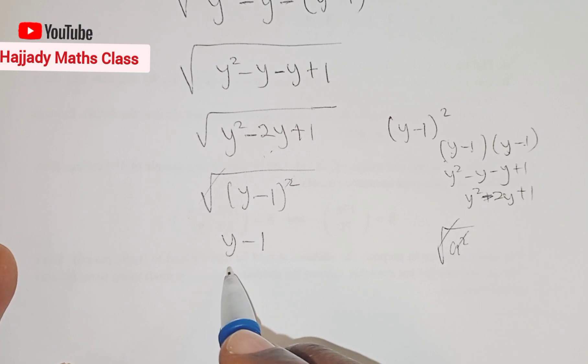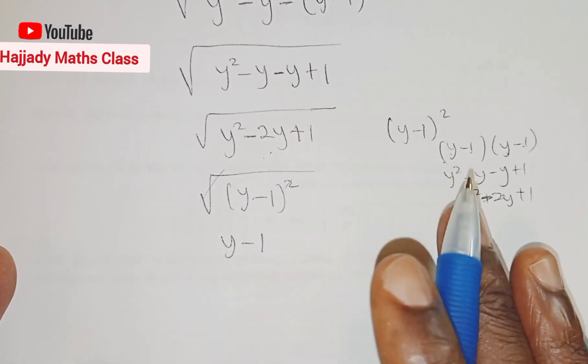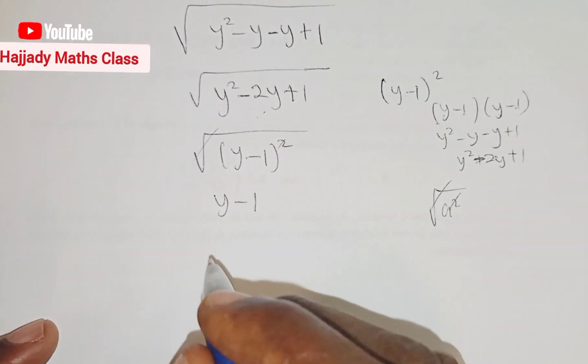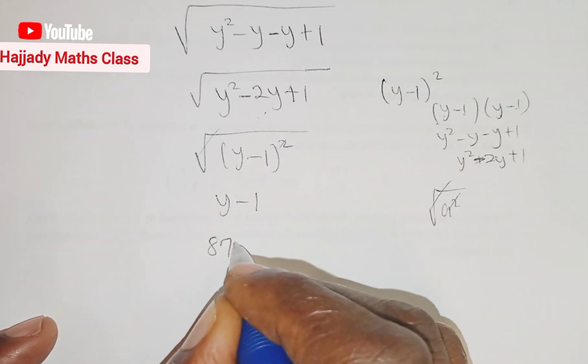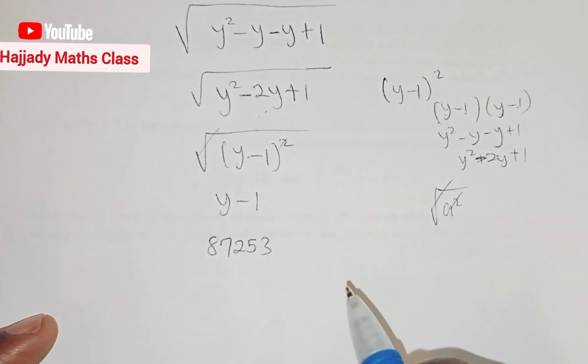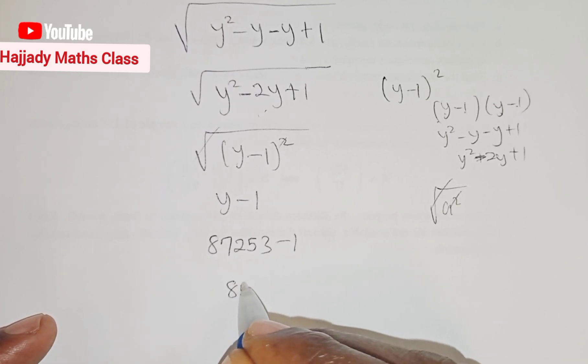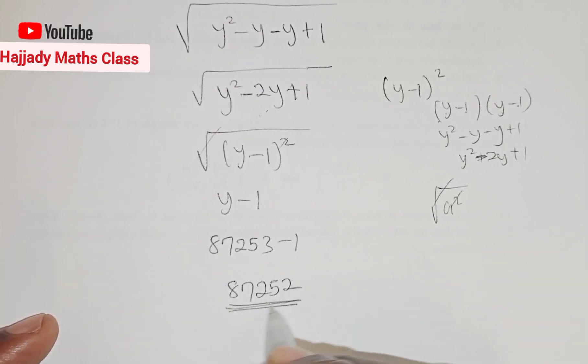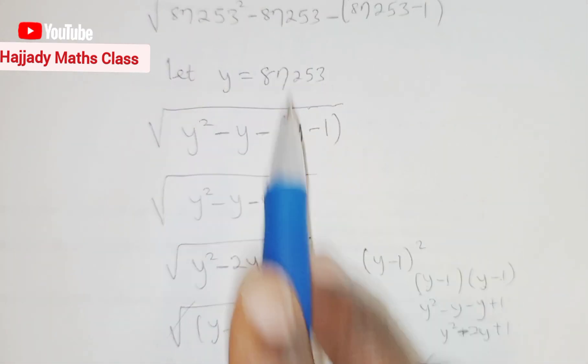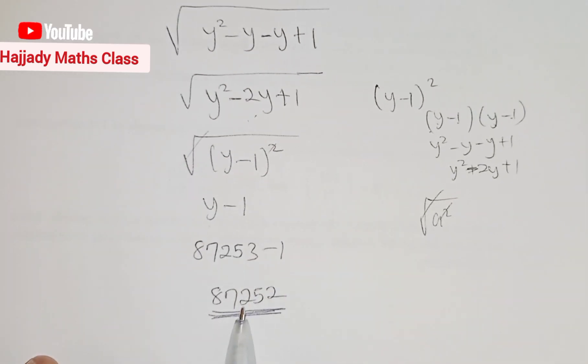And don't forget the value of our y from this, it's 87253. So with this, we are going to have 87253, which is the original value of y, minus 1. So finally, we have 87252. This is our answer. So that shows that the root of this is the same as this.